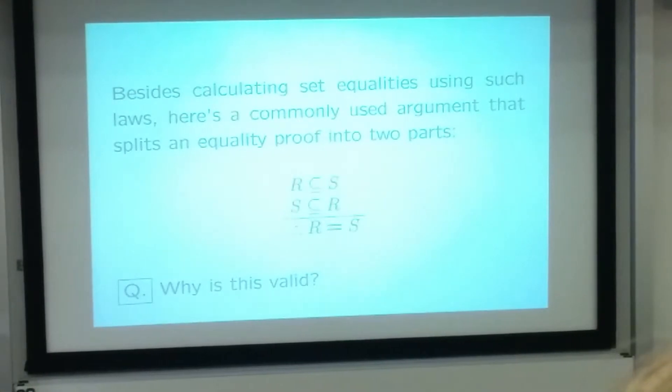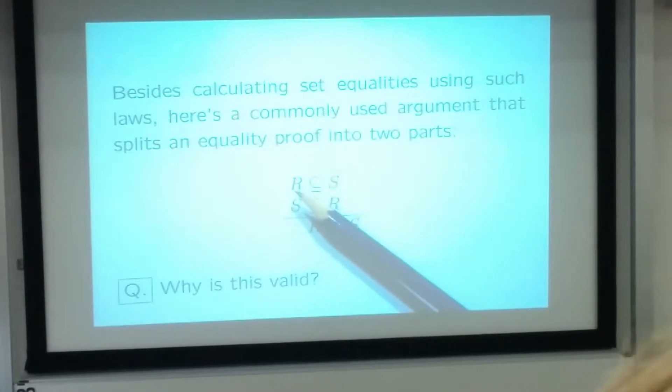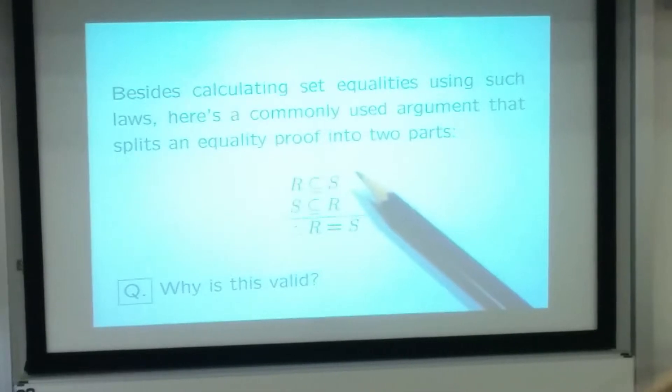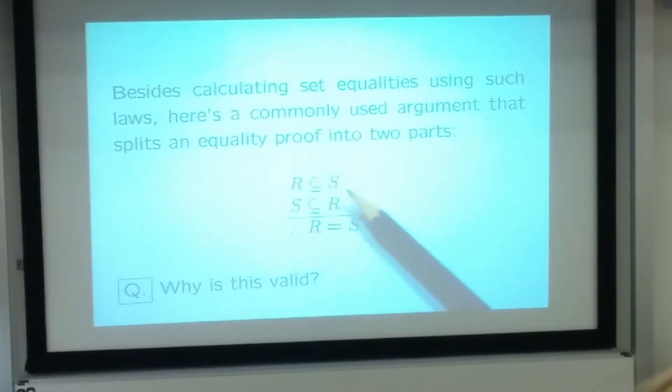So, the only way that could possibly fail is that one of them contains something that the other does not. But the one of them that supposedly contains something like that can't be R, because this first premise says that everything in R is also in S. That's what we would have shown. It can't be S either that supposedly has something extra that R is missing, because the second premise, if we have that, then we know that everything that's in S is also in R.